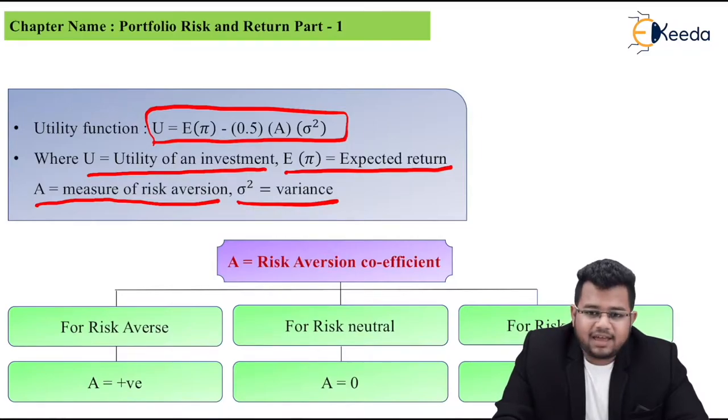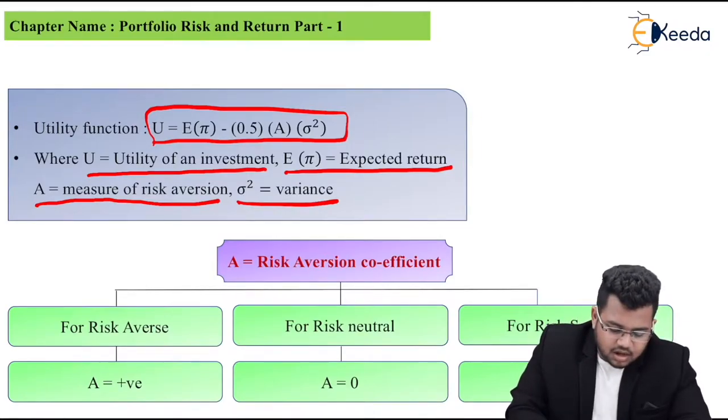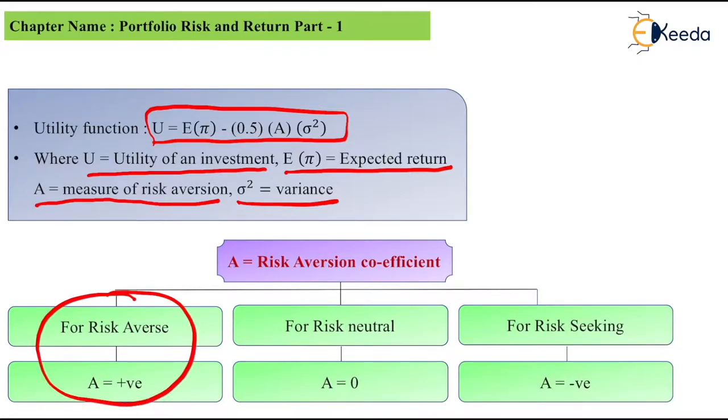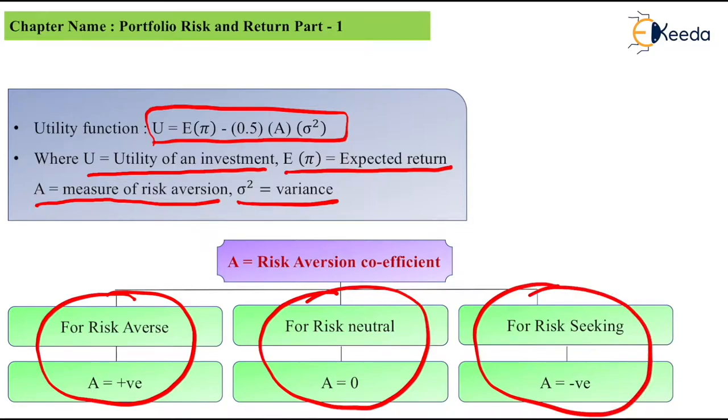Now, A is the risk aversion coefficient. If risk averse, it will be positive. If risk neutral, A will be zero. And if risk seeking, A will be negative. How do you remember this? The one who is more risk averse has higher A, positive. Risk neutral doesn't care, so A is zero. Risk seeker loves risk, so for them A is negative.